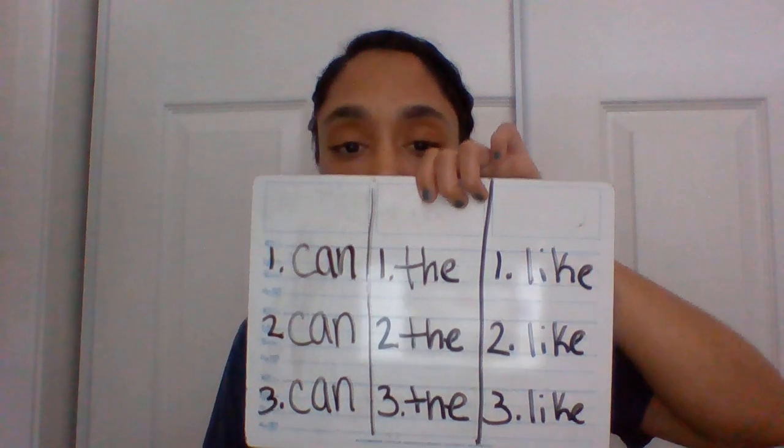And the last sight word that we're going to write three times is "like." Let's write it three times — like, like, like. Give me a thumbs up when you're ready. This is the way I write the word "like." Great job.